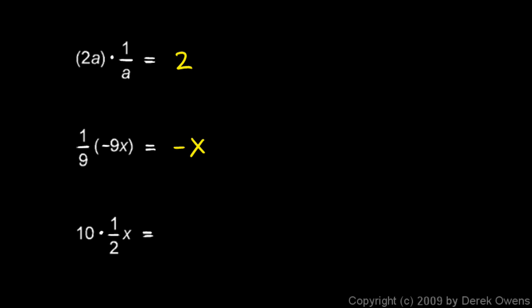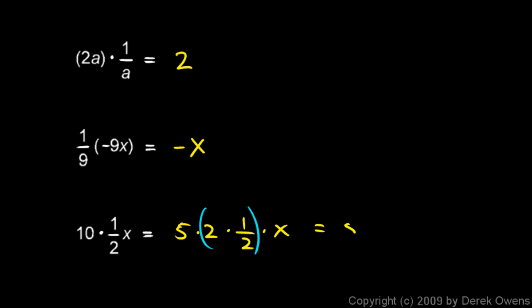We can do something similar with 10 times 1 half x. Remember that 10 is 5 times 2, so I can rewrite this as 5 times 2 times 1 half times x. The 2 times 1 half is just 1, so I have 5 times 1 times x, which equals 5x. Understanding reciprocals allows you to simplify expressions quickly, and reciprocals are also very important for division, which we'll cover in the next video.